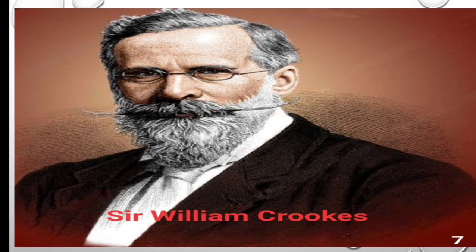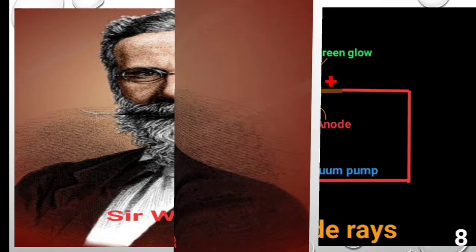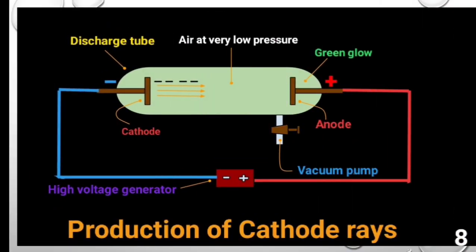an English chemist Sir William Crookes conducted an experiment to investigate electric discharge through gases. Because under ordinary conditions, gases are poor conductor of electricity, so he stored the gases at very low pressure that is about 0.01 to 0.001 mm of mercury and very high voltage that is more than 10,000 volt was applied through the gas in order to make the gas a good conductor of electricity.